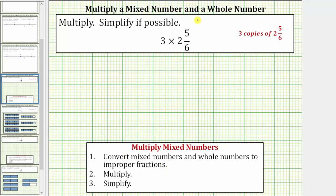The first step is to convert the mixed numbers and whole numbers to improper fractions, which means you write 3 as a fraction with the denominator of 1. So we have 3/1 times. Now we convert 2 and 5/6 to an improper fraction.